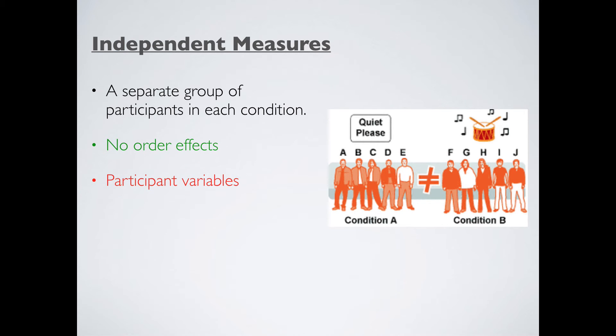Downsides to independent measures, however, are participant variables. A, B, C, D, and E, and F, G, H, I, and J, well, they're all different guys. So if there is any difference between these two groups, was that down to the music that was playing? Or was it down to the fact that they are just entirely different people? We don't know that 100% for sure. So it's a bit of a limited design in this case.